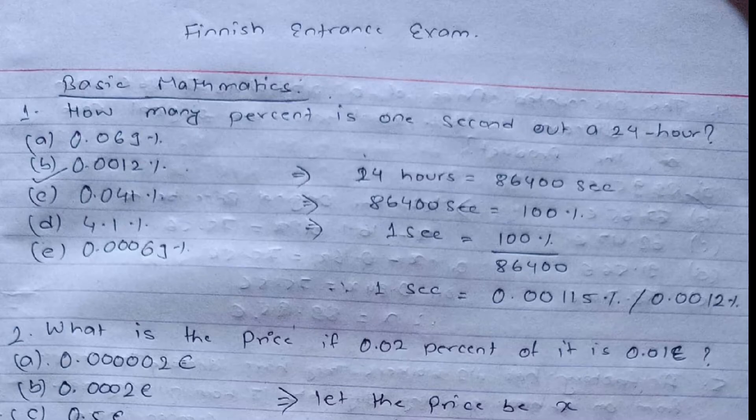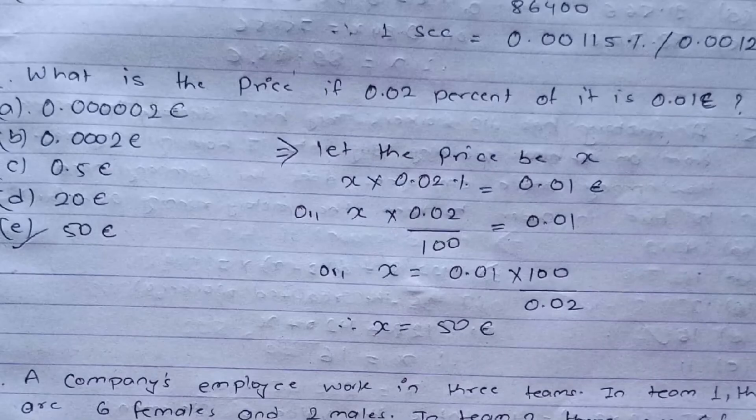Let us begin with the first question. These questions are from basic mathematics which will be helpful for both engineering as well as BBA entrance examination students. Question one: how many percent is one second out of a 24-hour period? We know that 24 hours equals 86,400 seconds, and since 86,400 seconds is 100%, one second equals 100 divided by 86,400, which is 0.00115%, or rounded to 0.0012%. The correct answer is option B: 0.0012%.